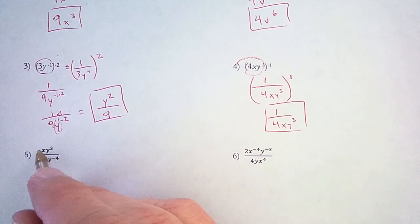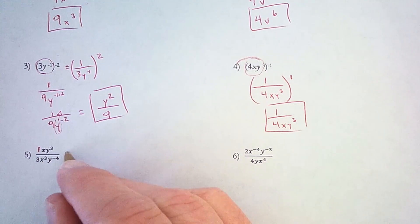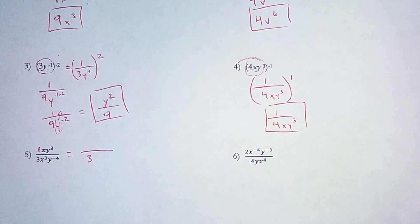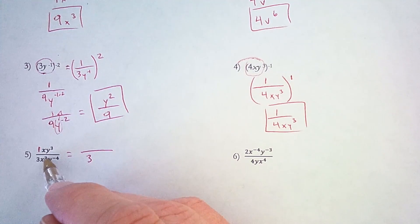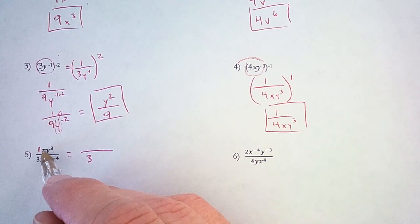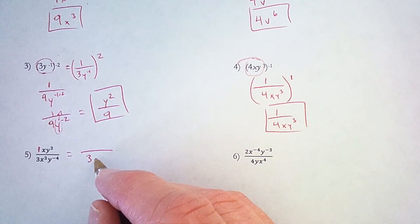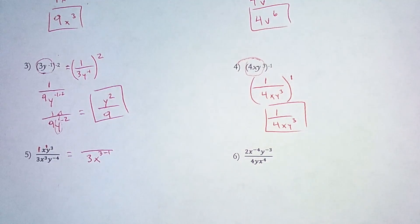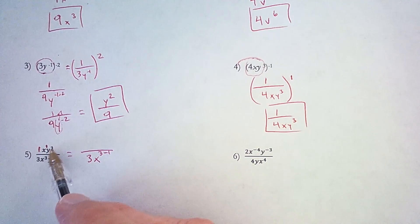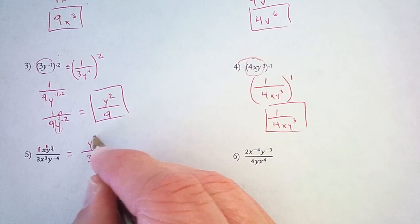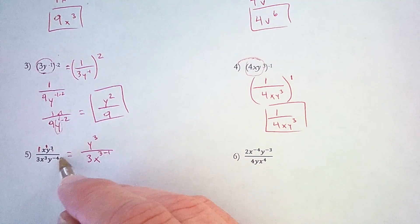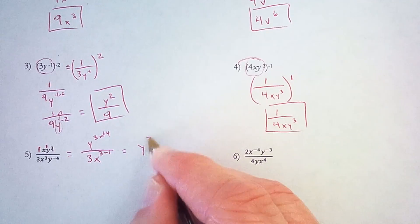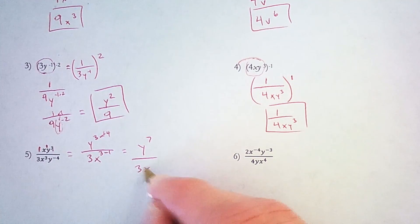So I'll simplify here. I've got a 1 over 3 — that's just going to stay 1 over 3. I'll only write the 1 in the numerator if that's all that's left. Then the x's — the bigger power is in the denominator, so I'm going to take this smaller power and move it down, and we do that by subtracting. So it's x to the 3 minus 1 power. And the y is bigger in the numerator, so y to the 3, and when we move this up we subtract — minus negative 4, or plus 4. So we have y to the 7th power over 3x squared.